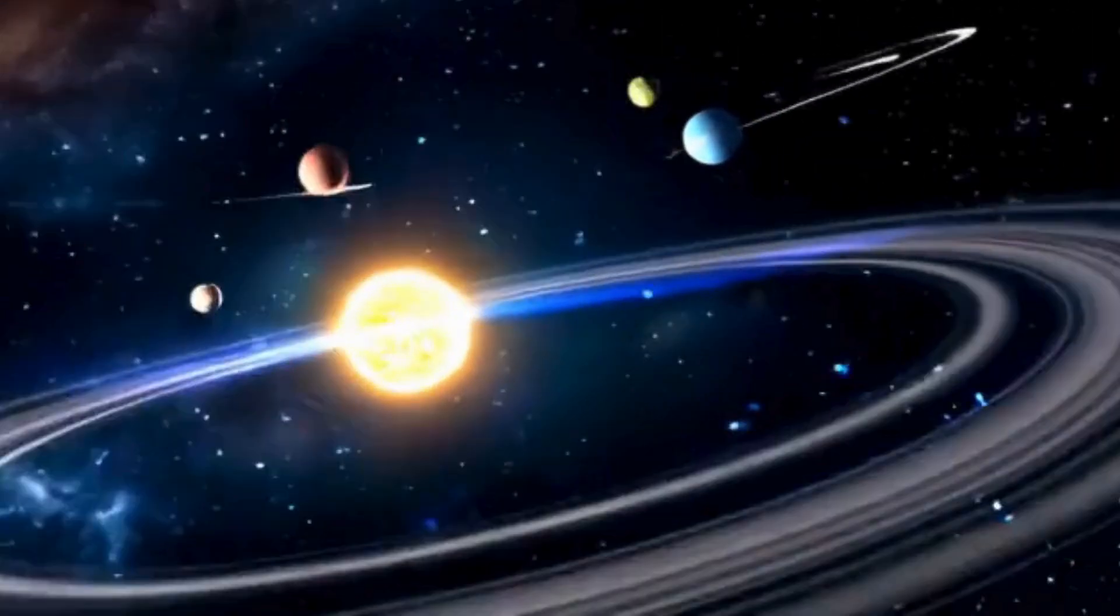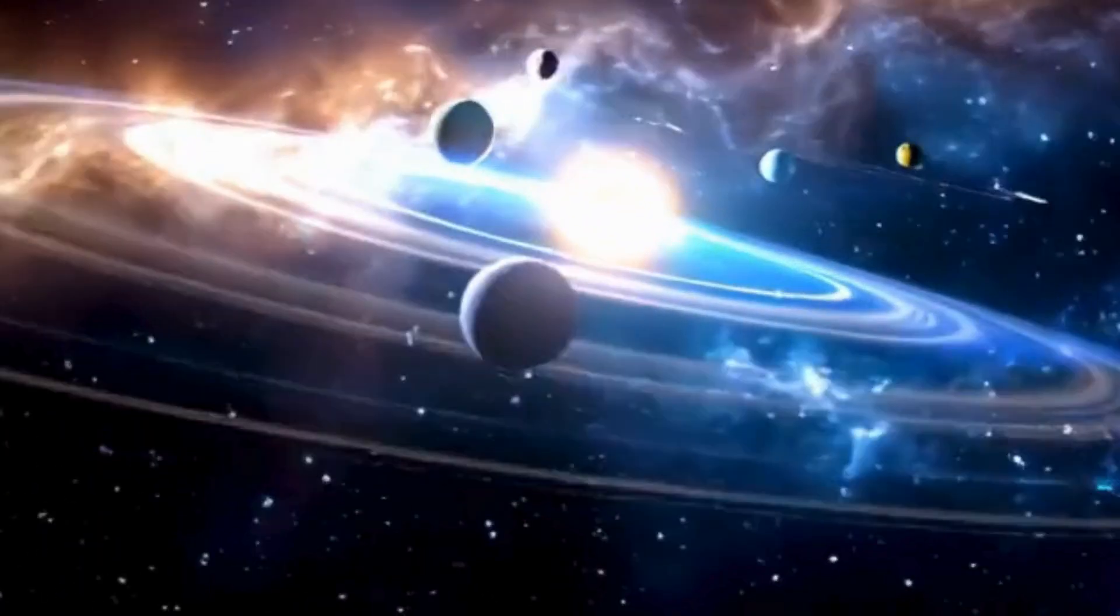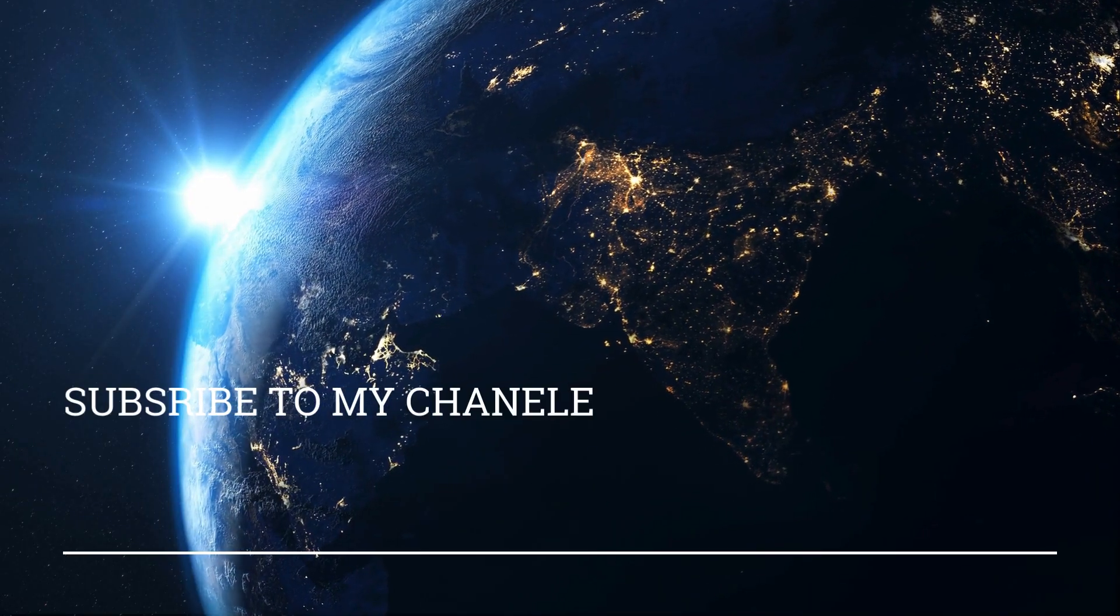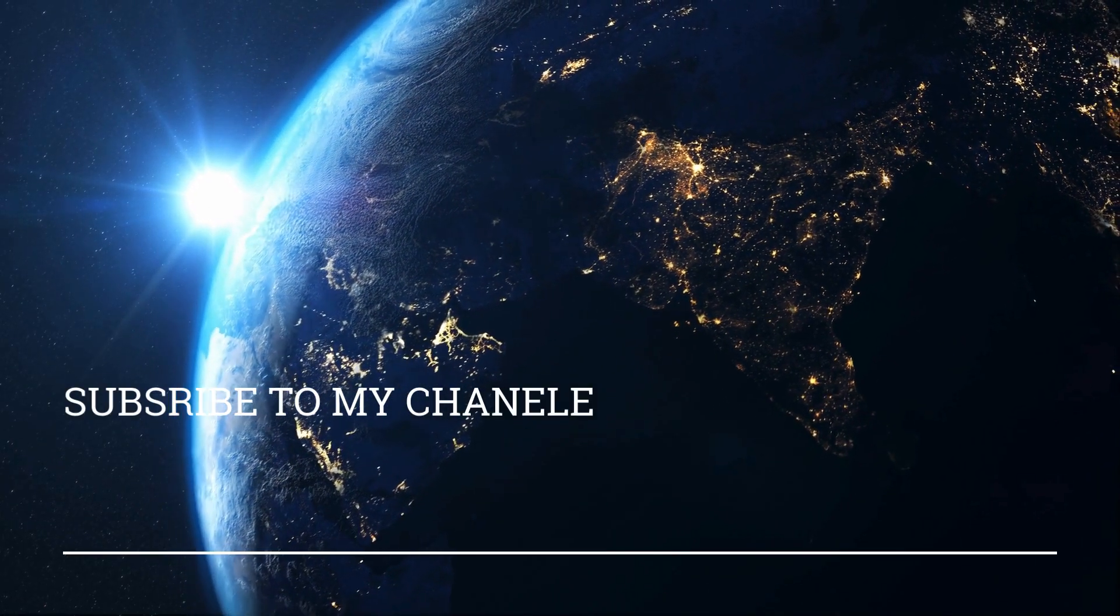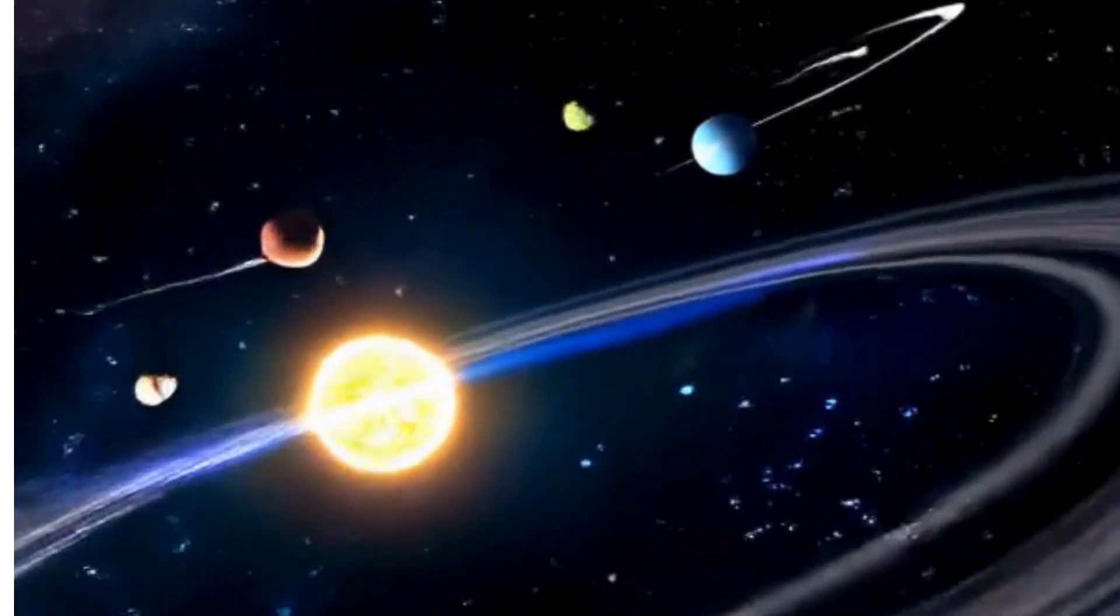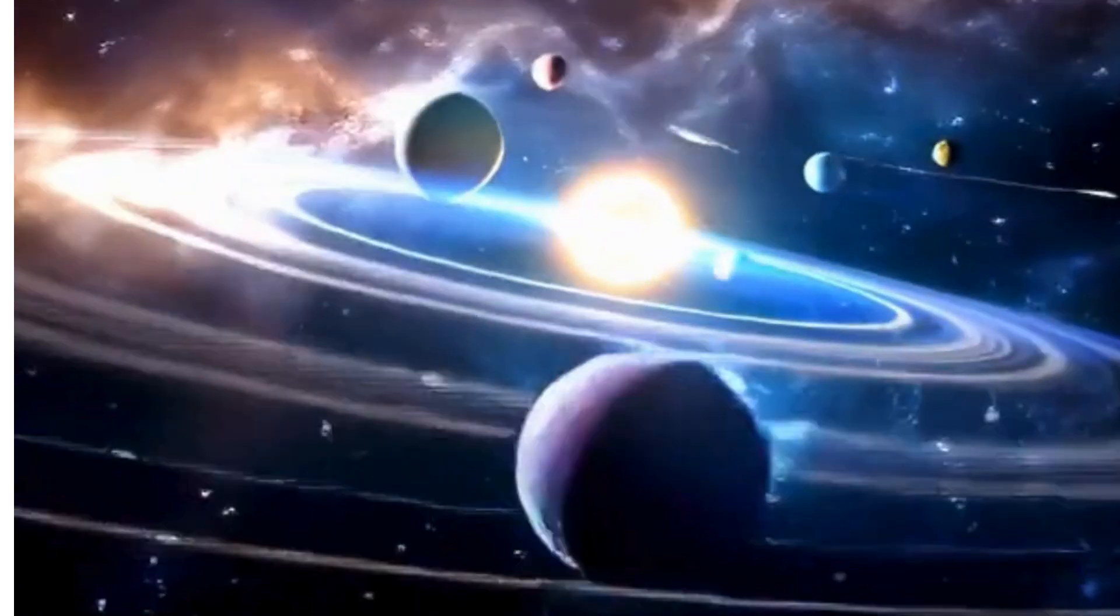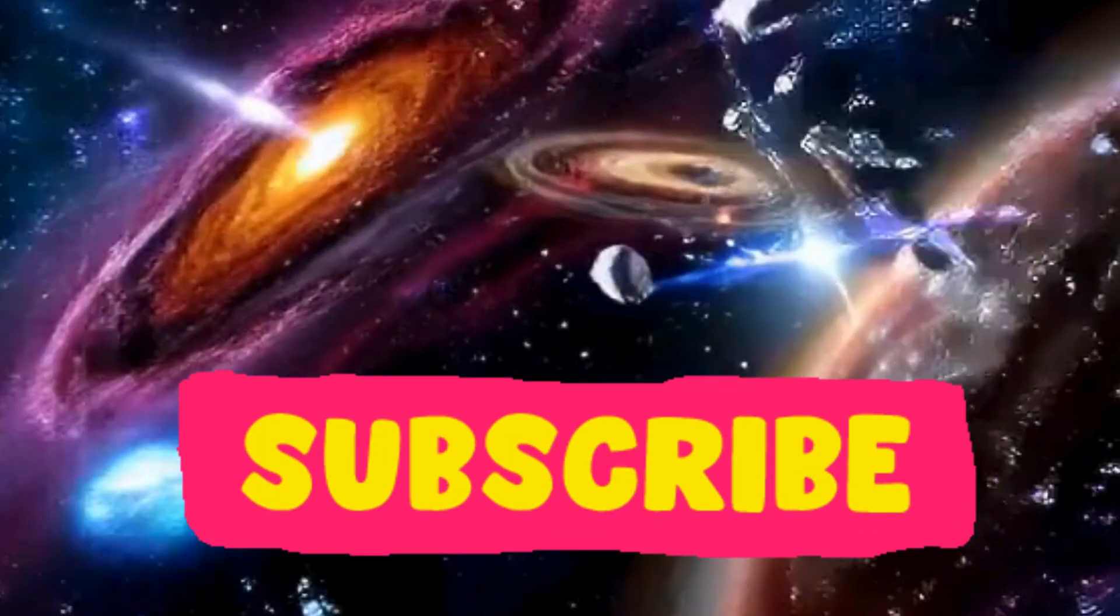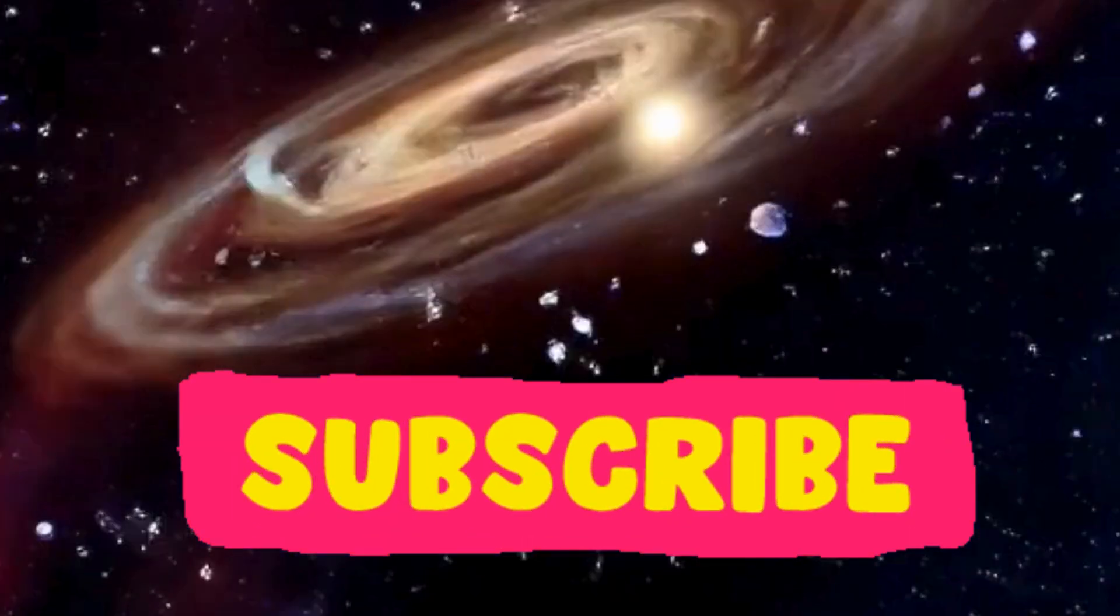Uranus spins sideways, it's so cool, a planet with a chilly blue pool. Neptune's winds are fast and strong. Far from the sun, it sings its song. Spin around the solar way.